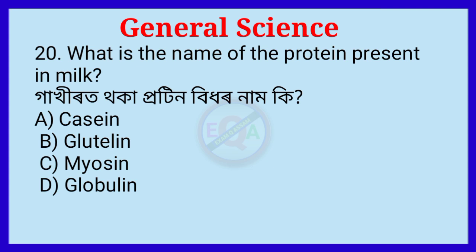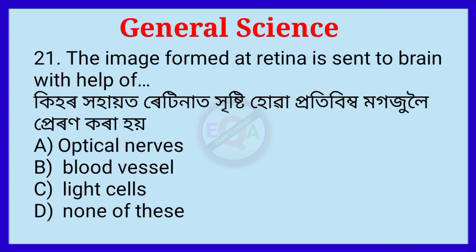Question number 21. The image formed at the retina is sent to the brain with the help of —